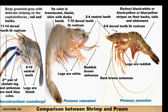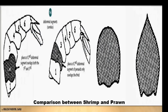The second pair of chelate legs is larger in the case of Macrobrachium rosenbergii, while the first pair of chelate legs is larger in the case of both shrimp species. From this picture we can also show some basic comparison between shrimp and prawn.